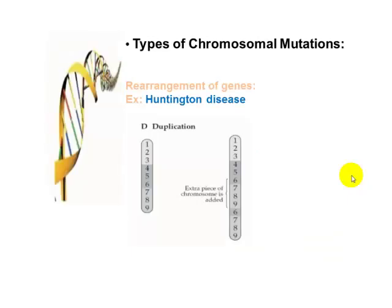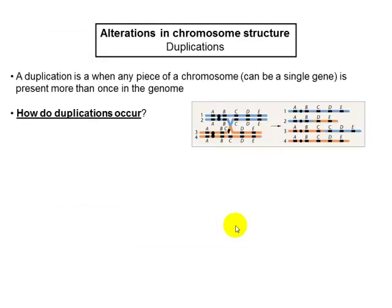Another type of rearrangement in the DNA sequence involves multiplications or duplications of specific sites — specific sequences of the chromosome. One example of this type of DNA mutation is Huntington's disease, where a certain piece of the DNA just gets duplicated.